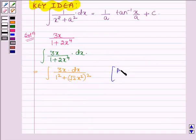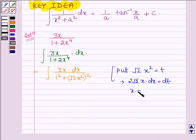Now let us put root 2 x square equals t. This implies 2 root 2 x dx equals dt, by differentiating both sides with respect to x. Or x dx equals dt upon 2 root 2.